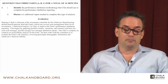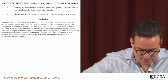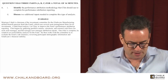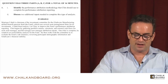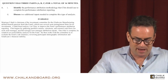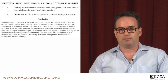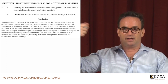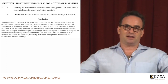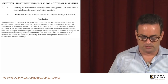Why? The key is in the story on the fourth line: Chin begins by gathering portfolio returns, valuations, and external cash flows for each asset manager, and then designs new manager attribution reports. That's the signal — the bell ringing — basically telling you that those are inputs to the macro attribution analysis approach.